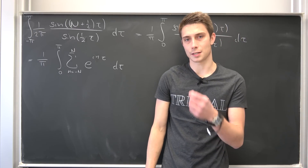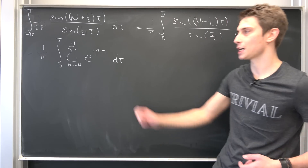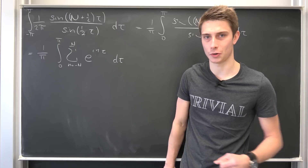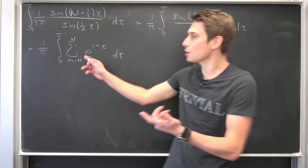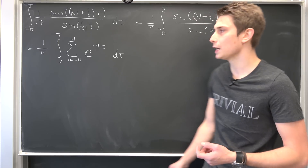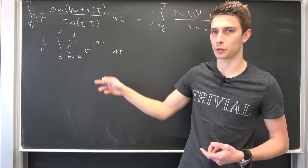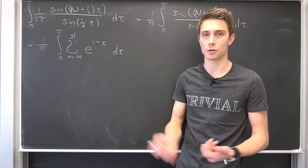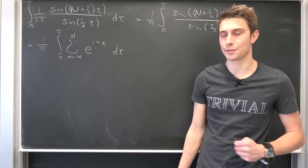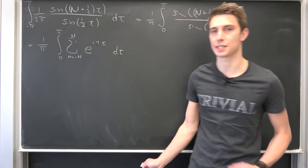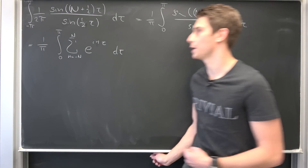As a thought-provoking point: if we just integrate term by term right now, it wouldn't work because of the singularity when n equals 0. Integrating e^(inτ) gives 1/(in) times that chunk, but plugging in 0 breaks things. To handle this, we are going to split the sum into three partial sums.